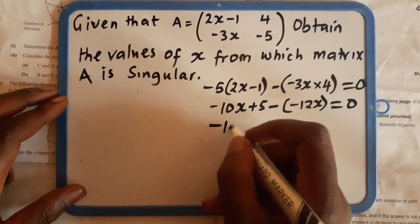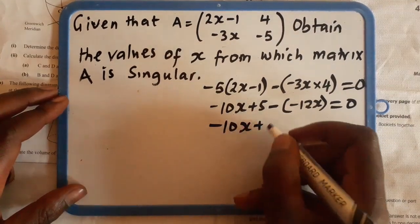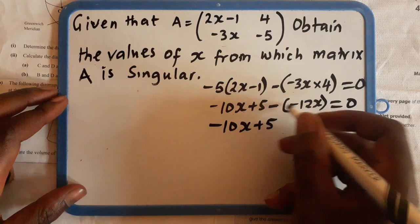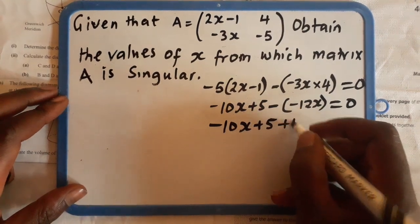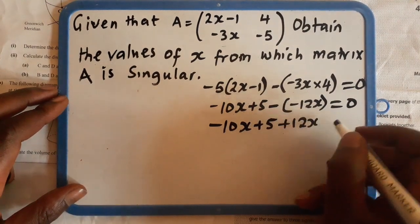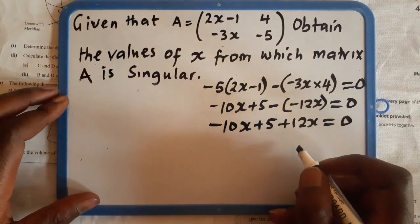So this will give us negative 10X plus 5. This minus and minus will have plus, plus 12X equals 0.